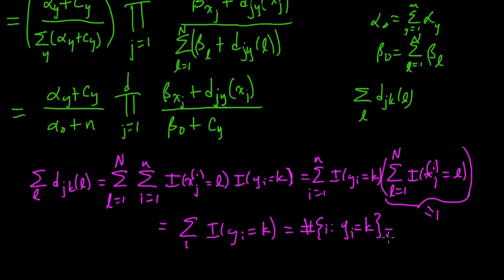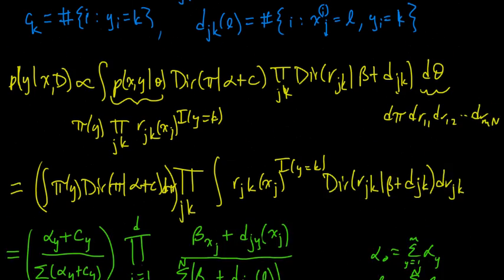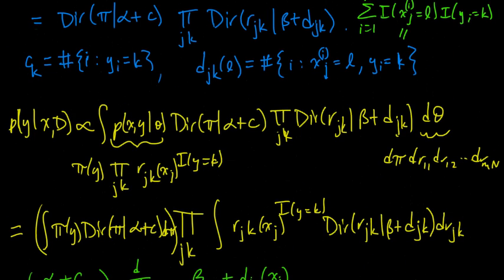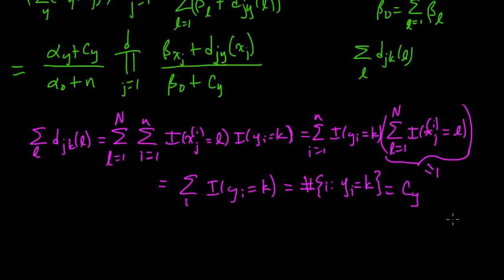And so this, and right, this was cy. That's what we defined to be cy. Number of i's such that y equals k. Okay, so that was just a little side note, just to verify that little argument.